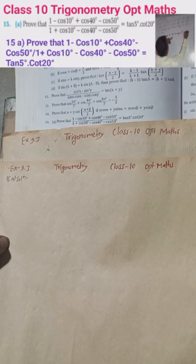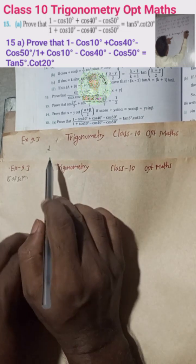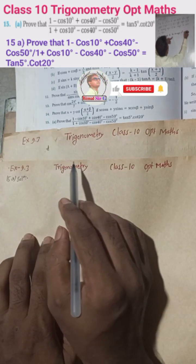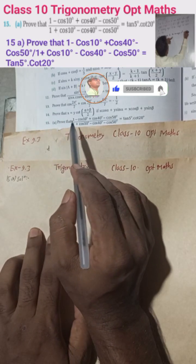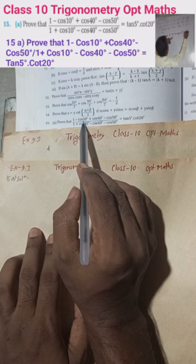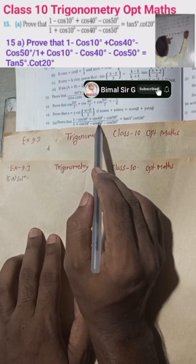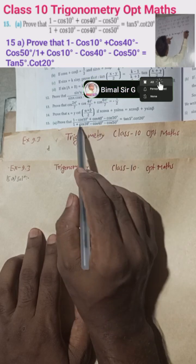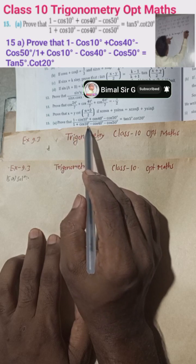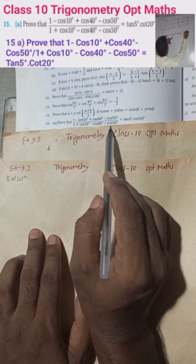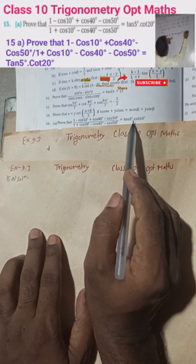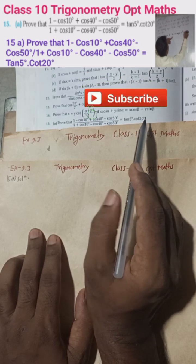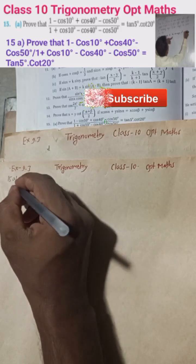Welcome back to Bimal Sarji's YouTube channel. This is Exercise 9.3, Trigonometry, Class 10 Opt Maths, Question Number 15a. Prove that (1 - cos10° + cos40° - cos50°) / (1 + cos10° - cos40° - cos50°) is equal to tan5° into cot20°. Let's begin the solution.